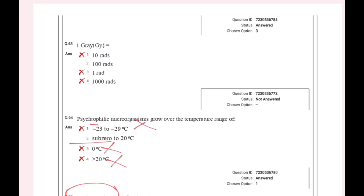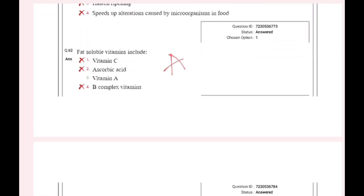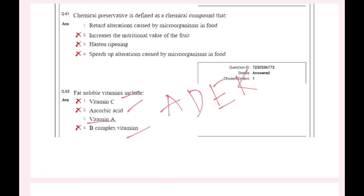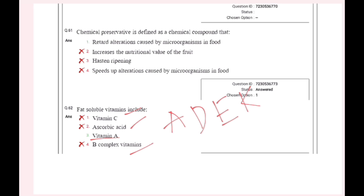1 gray is equal to 100 rads. Fat-soluble vitamins include A, D, E and K. Vitamin C, ascorbic acid, and B complex vitamins are water-soluble. ADEK is fat-soluble.